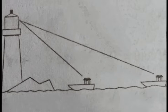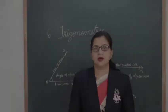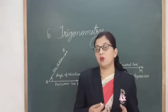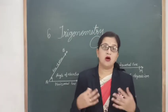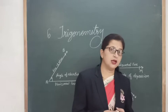We will not consider the height of the observer, and we shall normally regard the observer's line of vision to be parallel to the horizontal line. Let's see what this line of vision or horizontal line is.